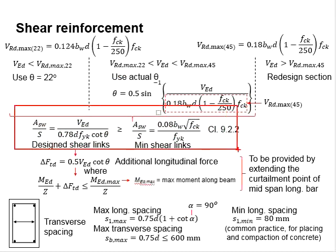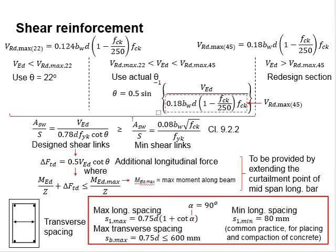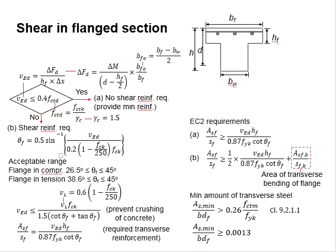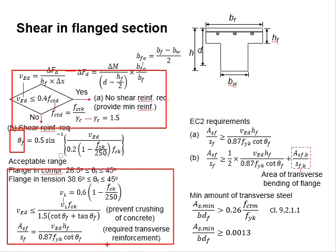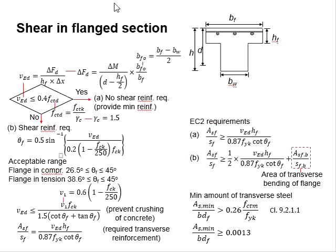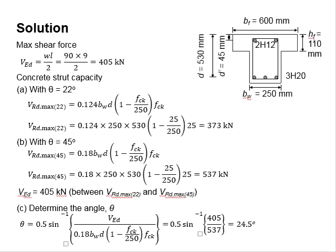Provide adequate reinforcement and check against the requirements to ensure serviceability of the section. On top of that, you have to check for the additional longitudinal force to determine whether the longitudinal reinforcement provided is adequate. As for the design of the transverse reinforcement, refer to this slide. You will need to determine whether shear reinforcement is required, determine the angle, check against the criteria, determine the amount of reinforcement required, and then check for other requirements as outlined by Eurocode 2.